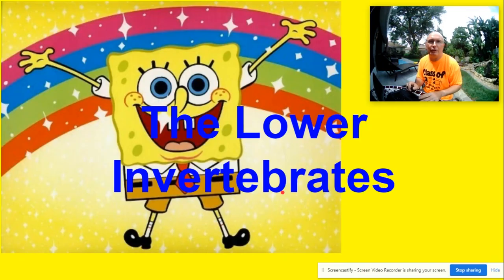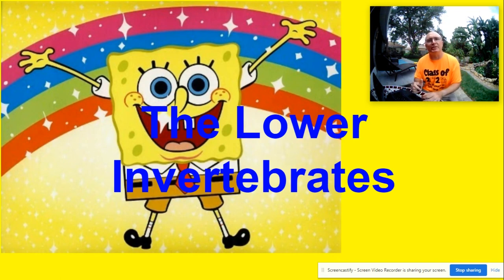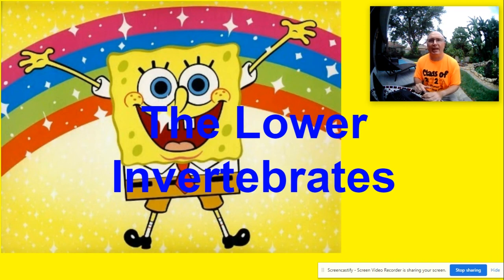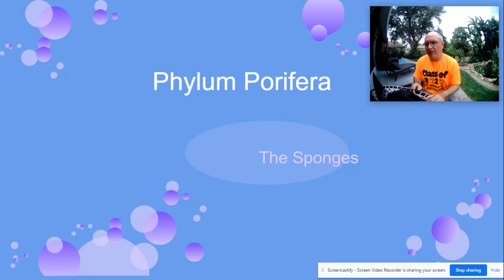Hey everyone, welcome to a new unit. We are starting our final unit on the animal kingdom, and we're going to start with some of the simpler organisms found in the ocean and work our way up to more complex ones. The first main group we're going to talk about are the invertebrates — organisms that lack an internal skeleton of either bone or cartilage.